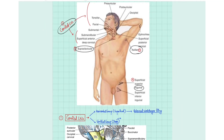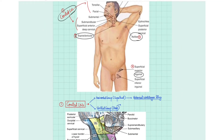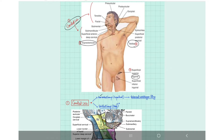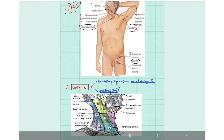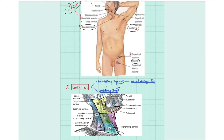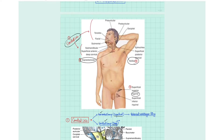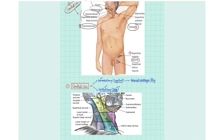The cervical group of lymph nodes includes a horizontal group and a vertical group. The horizontal group lies above the fascia and is known as the superficial group, whereas the vertical group lies deep to the fascia and is known as the deep group. The horizontal group includes the external ring, which includes the pre-auricular, post-auricular, occipital, submental, and submandibular lymph nodes.